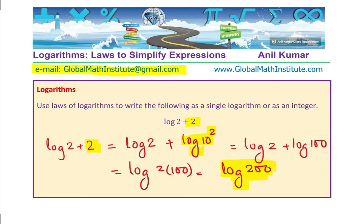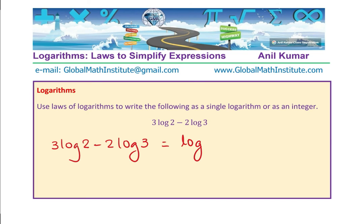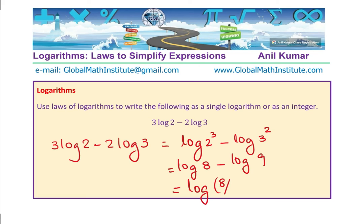If you want to learn from me, you can send an email at the given address. The last two questions incorporate another rule — a product rule used in a slightly different way. Question: 3 log base 10 of 2, minus 2 log base 10 of 3. Rewriting using the power law: log base 10 of 2³ minus log base 10 of 3². That gives log base 10 of 8 minus log base 10 of 9, because 2³ = 8 and 3² = 9. The answer is log of 8 over 9.